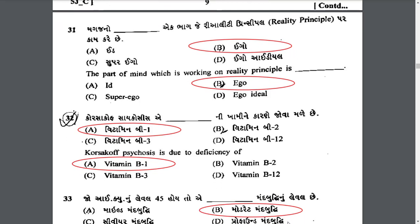Korsakoff's psychosis is due to the deficiency of Vitamin B1 — thiamine. Korsakoff's psychosis is a disease caused by thiamine deficiency, usually associated with alcohol use, and is a later complication of Wernicke's encephalopathy. Symptoms include memory loss, confusion, and behavioral changes.